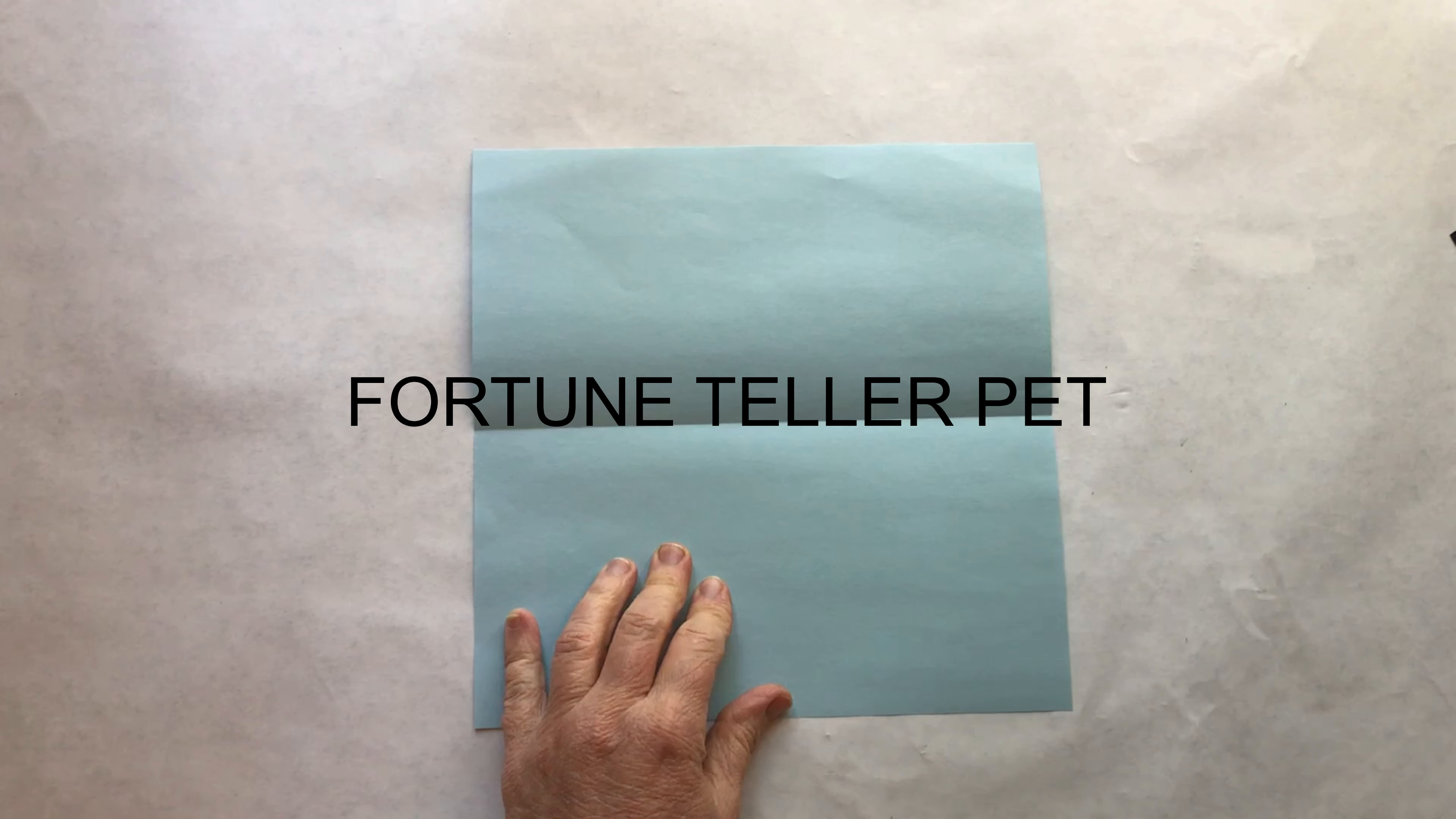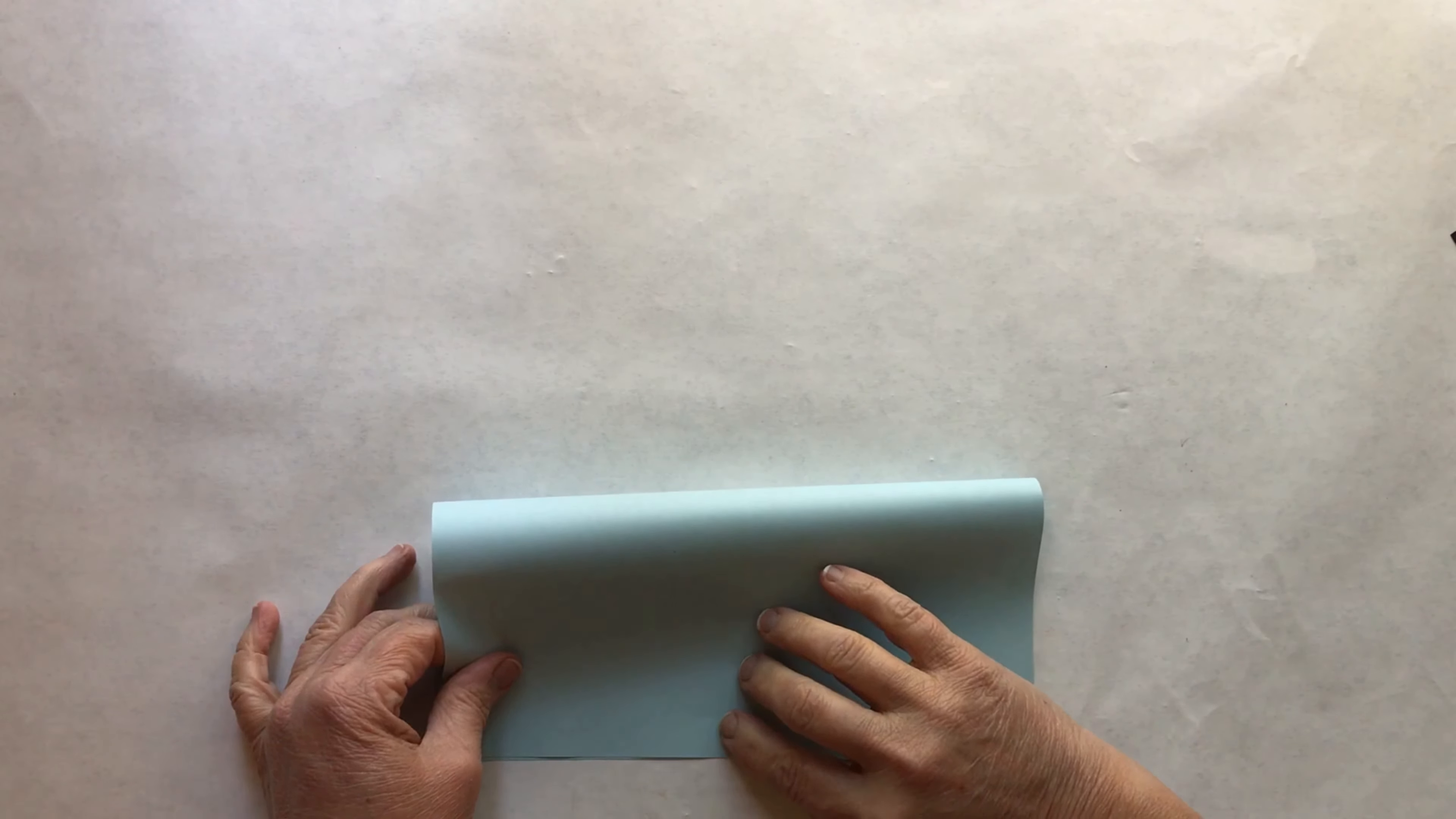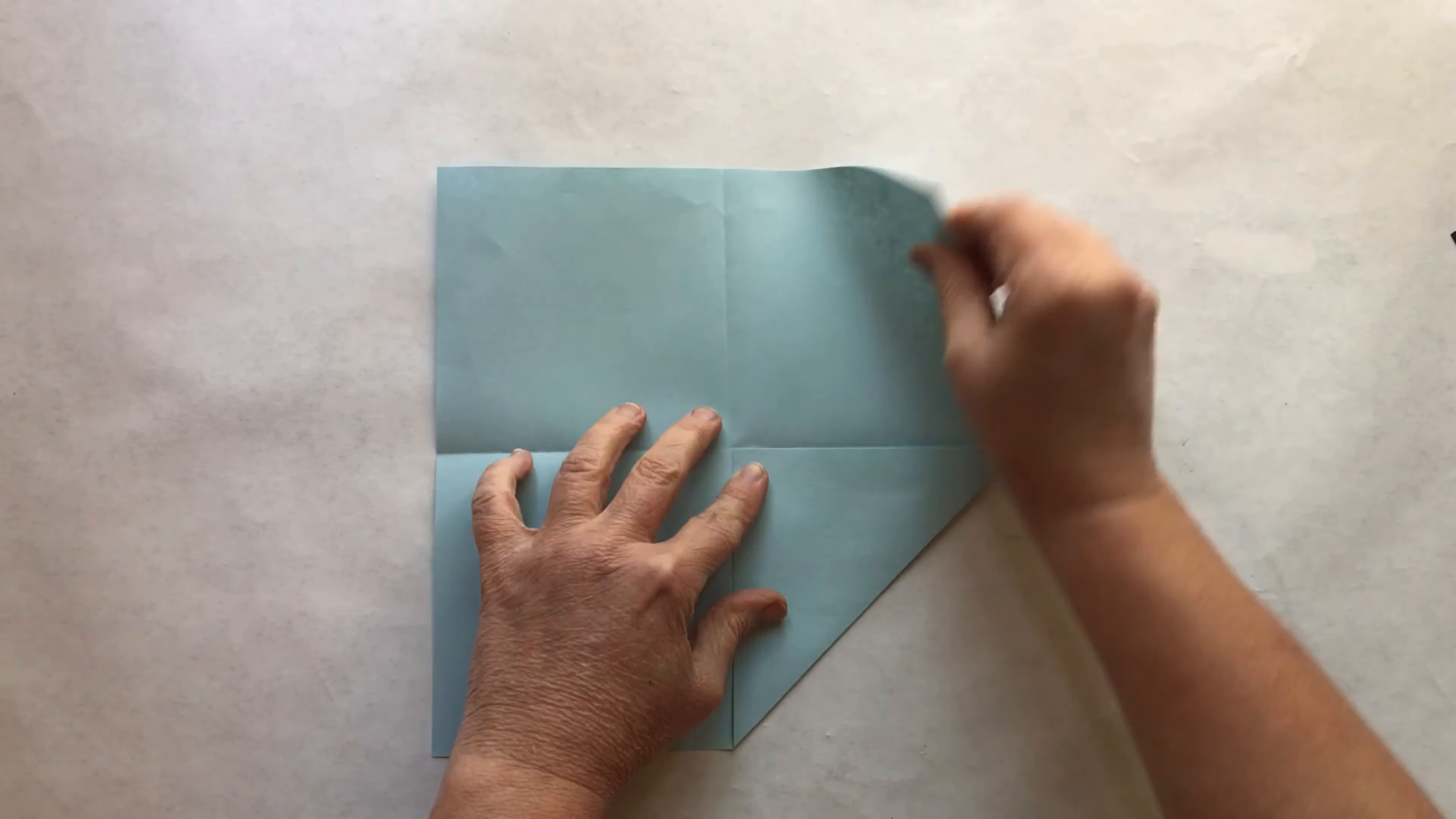Project number three, fortune teller pet. To make this project we will first need to make a fortune teller. Take a piece of eight and a half by eight and a half paper, fold over like so, open, fold the other side. Fold each corner to the middle.